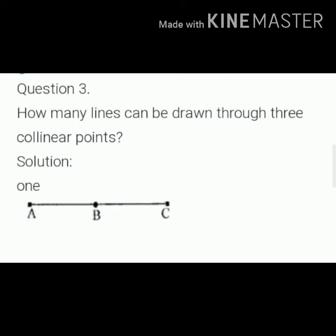Question number three. How many lines can be drawn through three collinear points? To connect three collinear points, only one line can be drawn. And if there are four or five or more collinear points, we can draw only one line because the points are collinear.